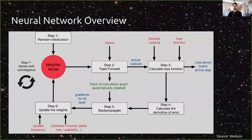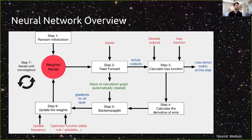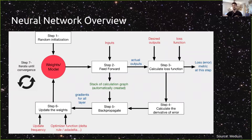To summarize the neural network steps: first, randomly initialize all weights; second, apply the input and do the feed-forward pass through the network; third, calculate your loss function; fourth, calculate derivatives in the back propagation step to better update the nodes; fifth, update the weights; and finally iterate this process until you converge to a value within whatever loss metric threshold you're using.